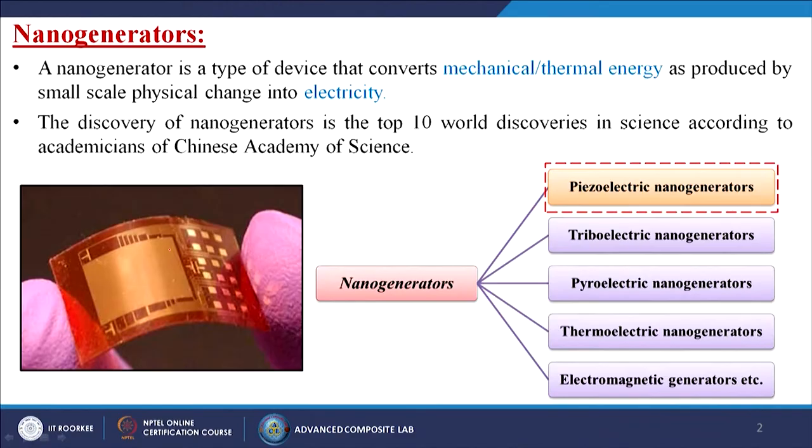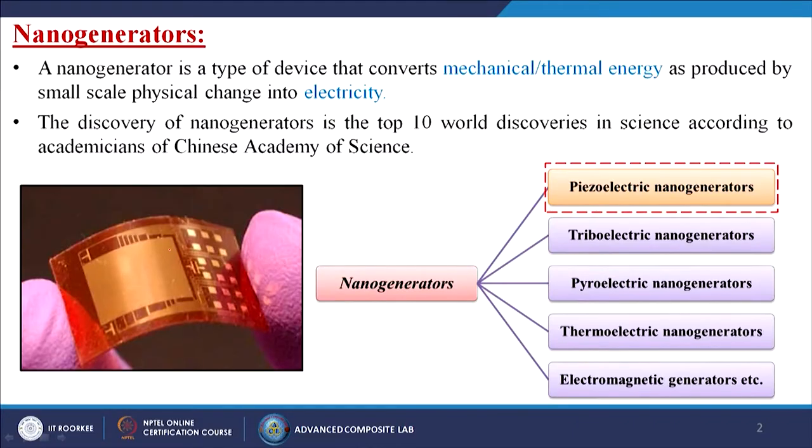The discovery of nanogenerators is ranked in the top 10 world discoveries in science according to the Chinese Academy of Science. They believe the nanogenerator concept is one of the most versatile and latest discoveries that can be ranked within the top 10 innovations in the world till today. Nanogenerators are divided into several parts based on what type of materials and what type of energy input are used to get electricity.